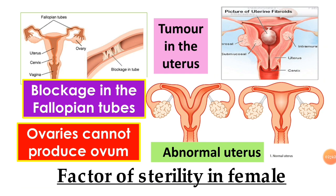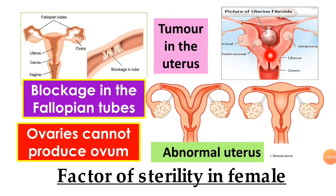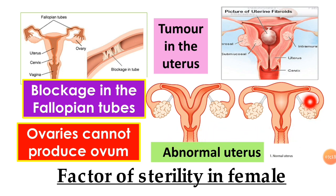Now for the factors of sterility in females. First, blockage in the fallopian tube — as you can see here, this is the blockage in the tube. Some women's ovaries cannot produce ovum. There may also be a tumour in the uterus. Some of them also have an abnormal uterus. This is the normal uterus showing the ovary and uterus, while the abnormal uterus looks different in shape.